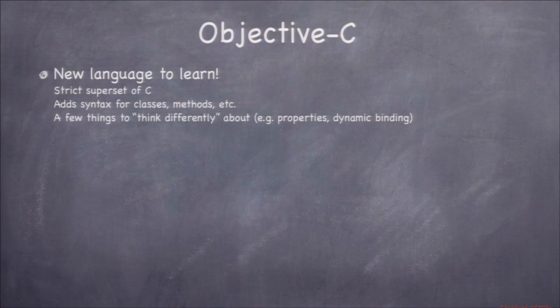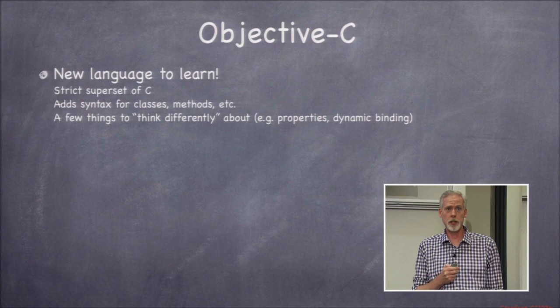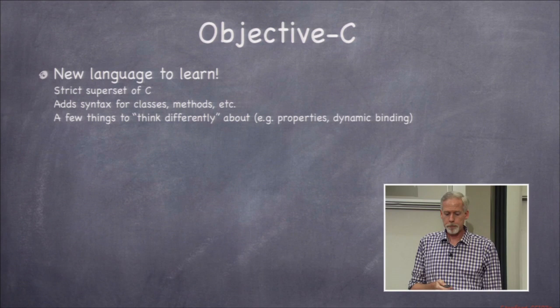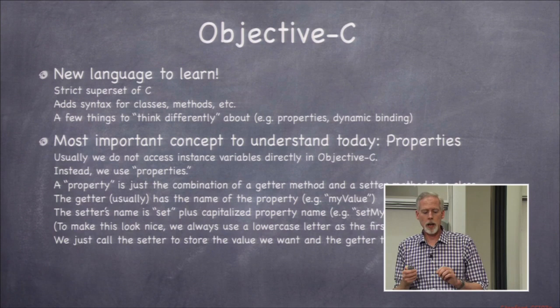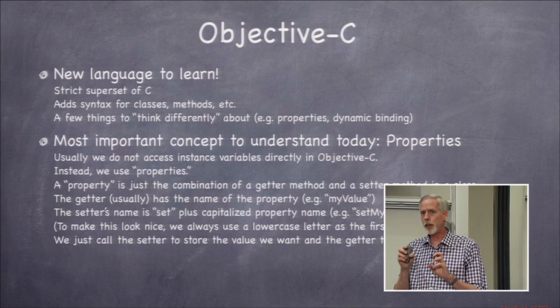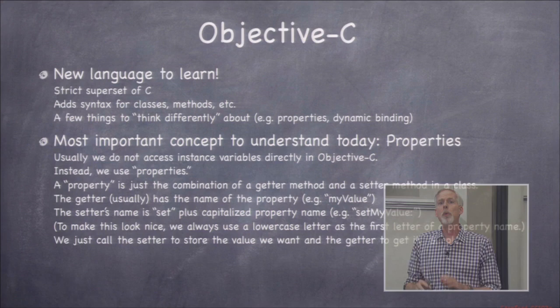On to Objective-C. Objective-C is a strict superset of C — everything you can do in C, you can do in Objective-C. We'll do a lot of C things in this class but also a lot of object-oriented stuff. One of the things to think differently about is properties — that's how we access our instance variables in Objective-C.